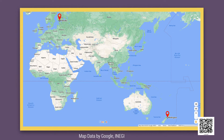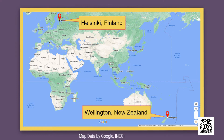I have also marked two locations using the red marker. The first one is the city Helsinki, which is the capital of Finland, towards the North Pole. And the other is Wellington, which is the capital of New Zealand and is near the South Pole. We will be comparing the duration of bright sunshine in these two cities over the year.